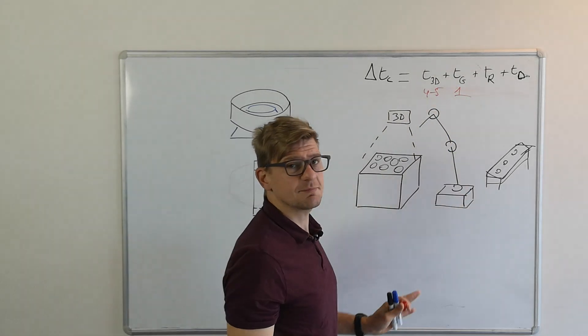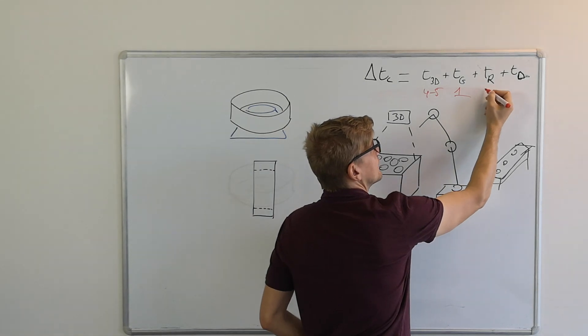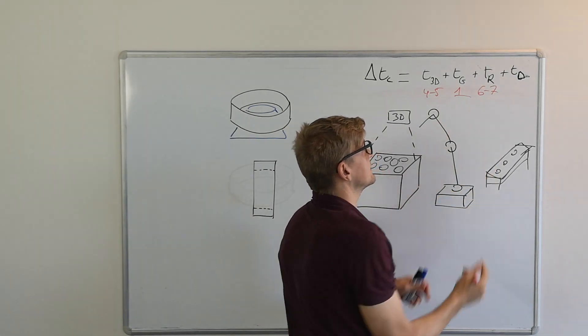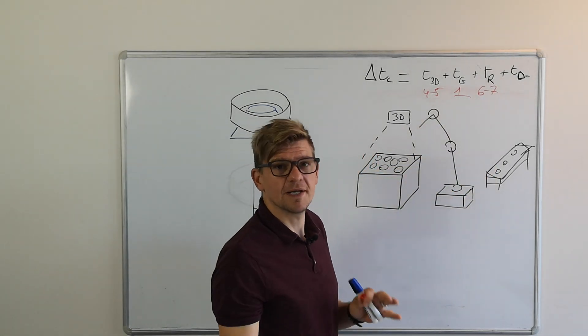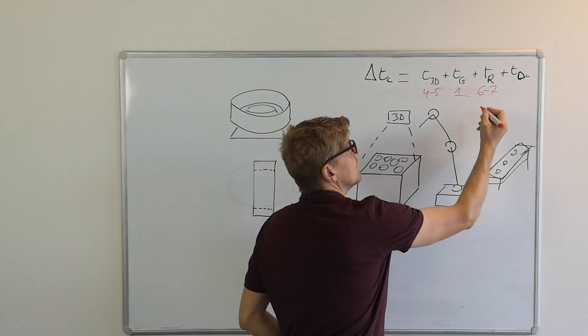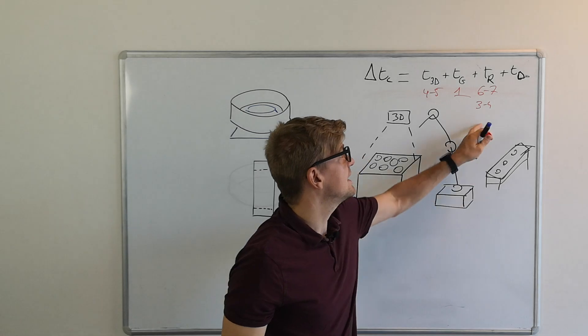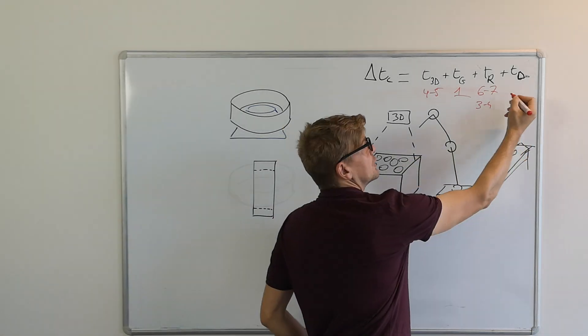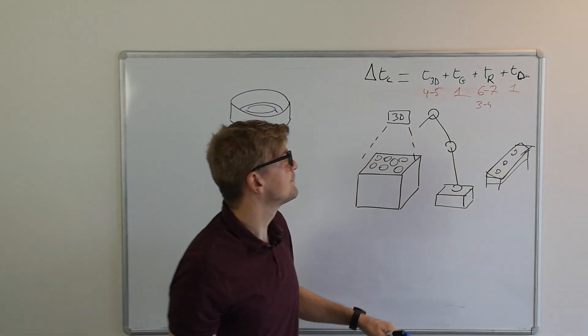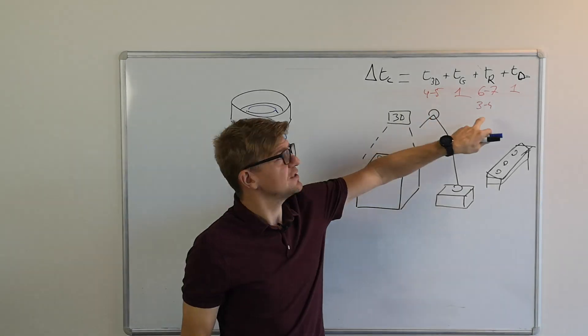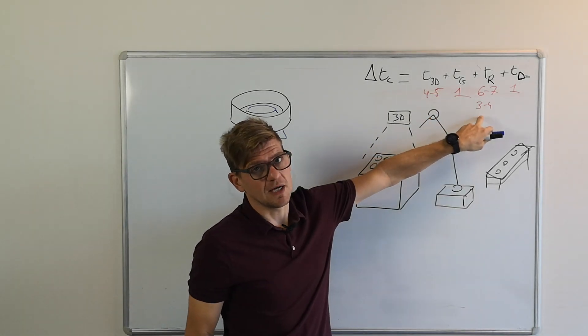We need one second for the grasping. We need about six to seven seconds to move the part depending on what type of robot. This can be very different. This can go from three to four seconds, and then we have the time of dropping the part. Let's say one second. What do we see? It's the vision and the robot who take up most of the time.